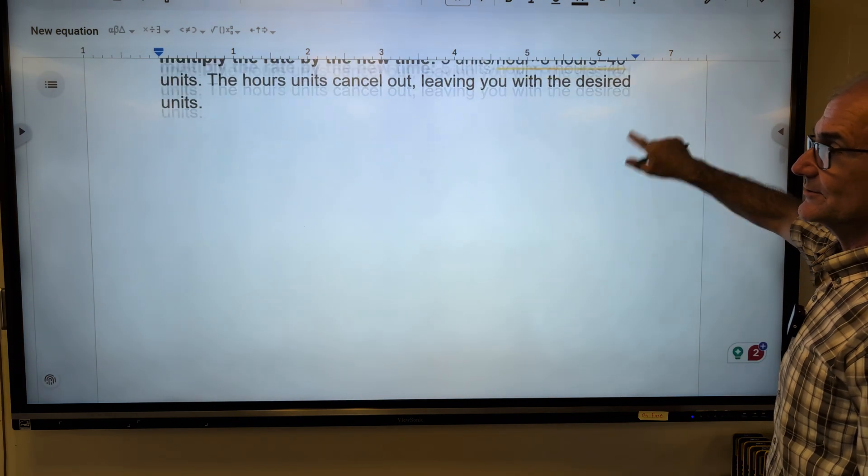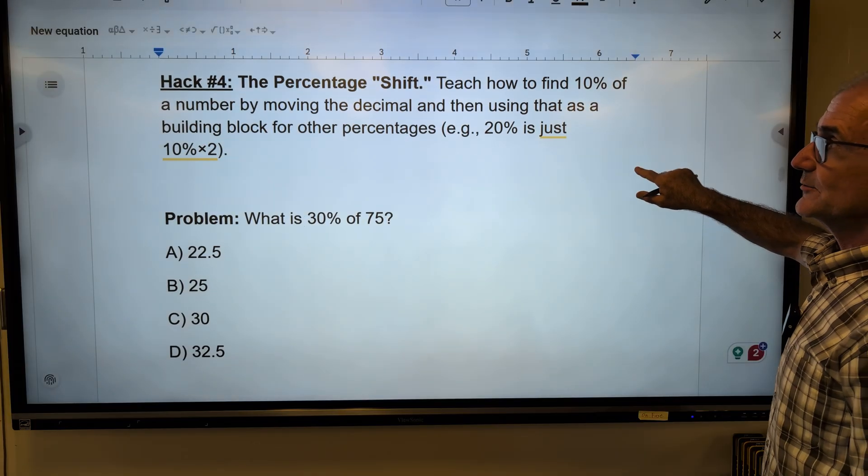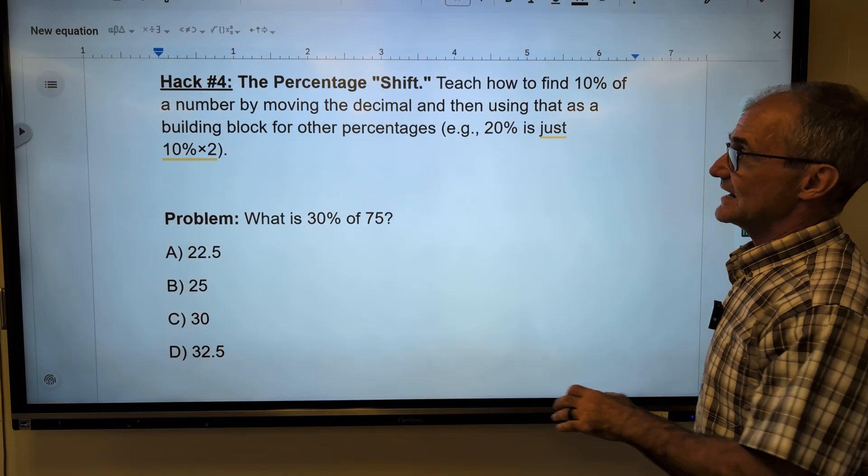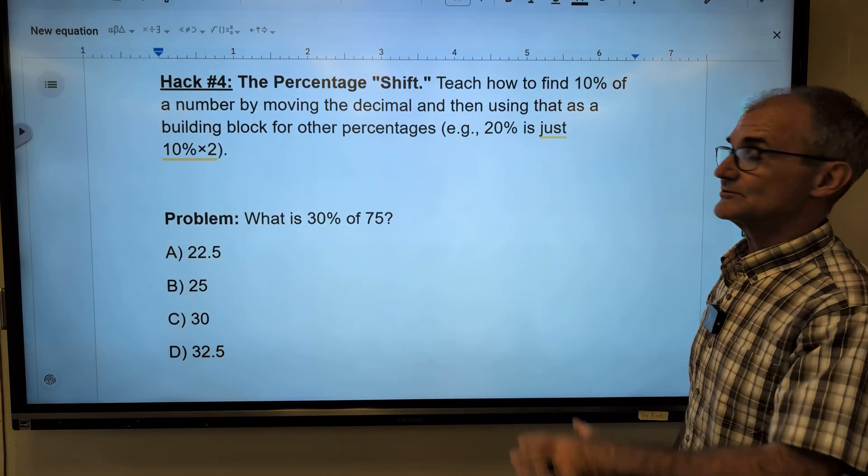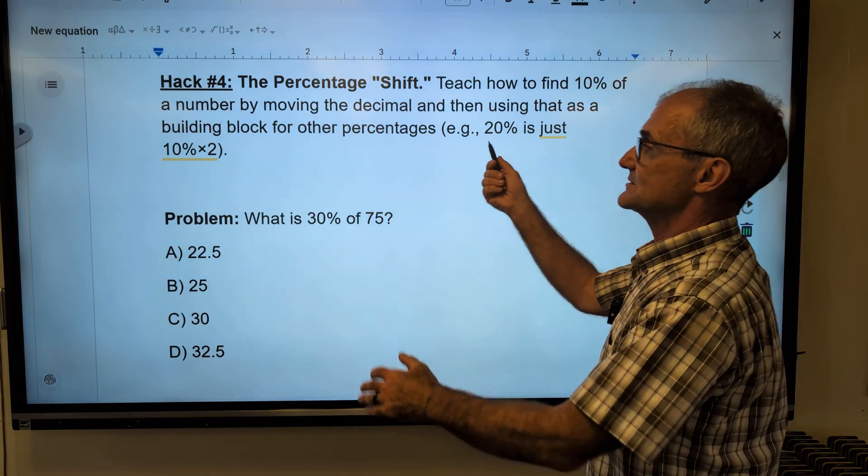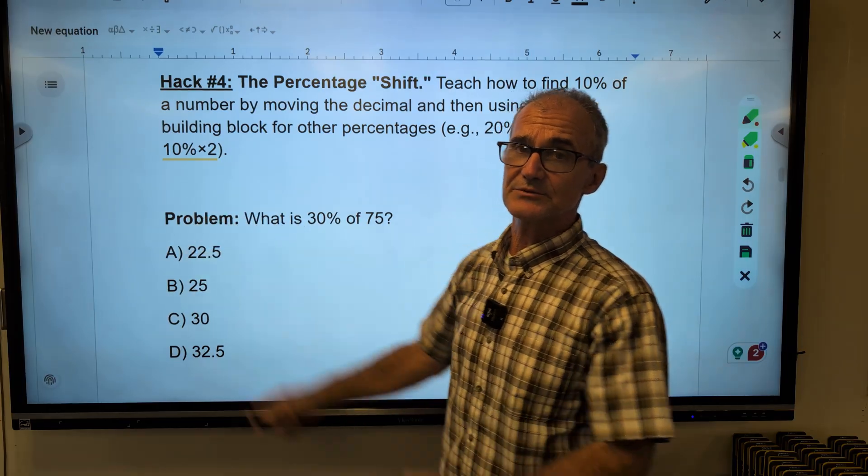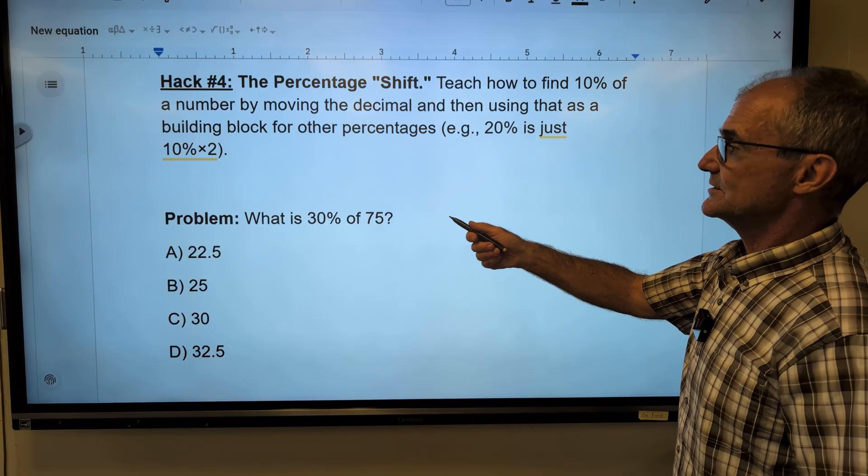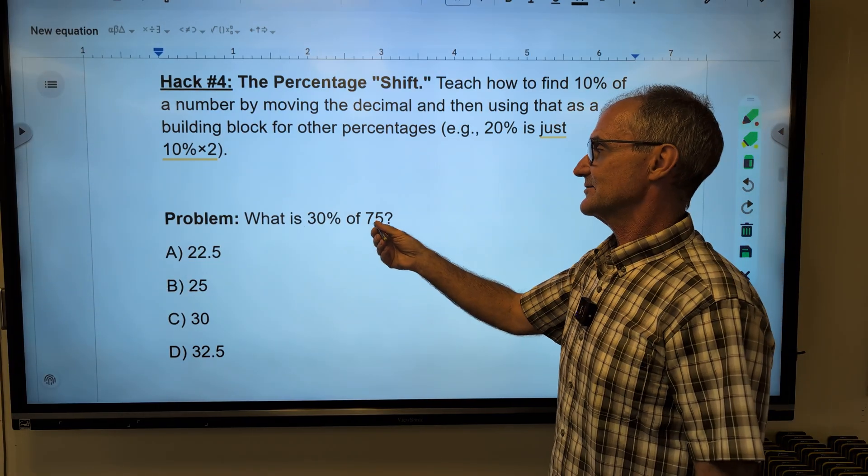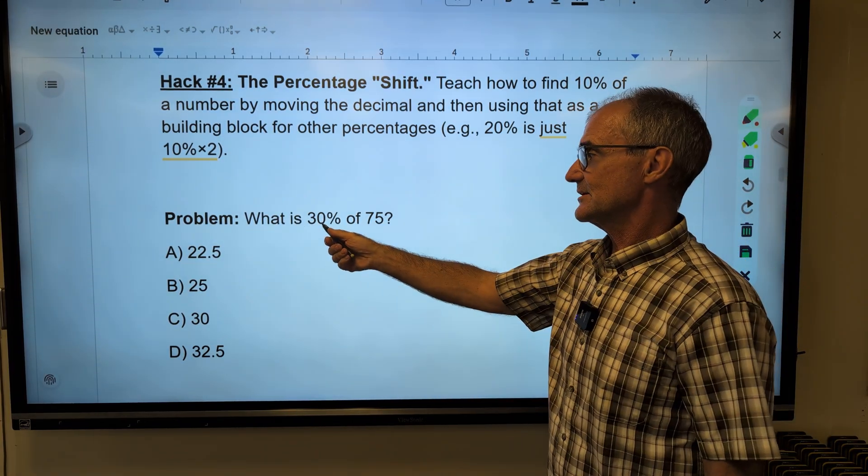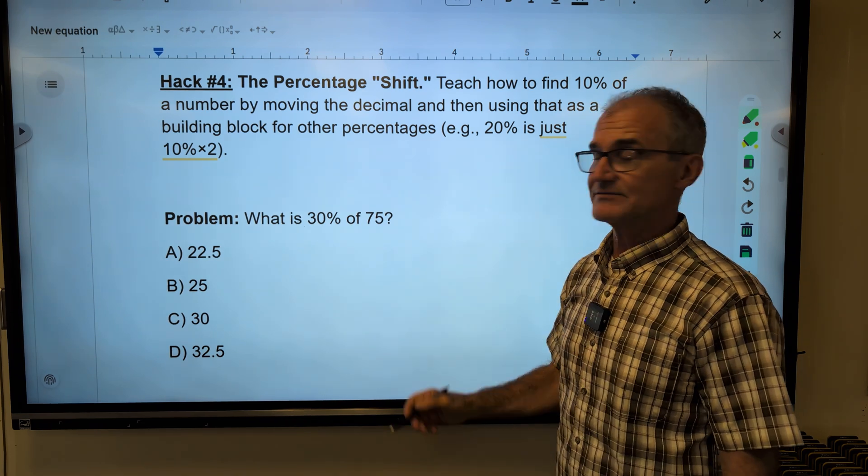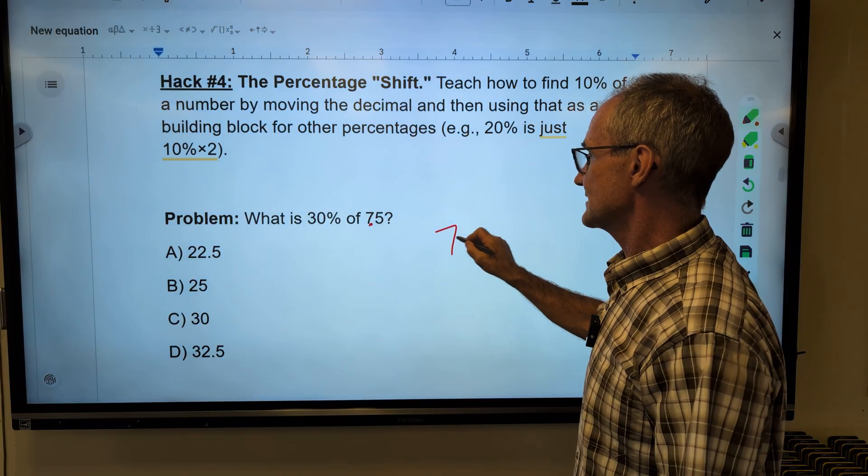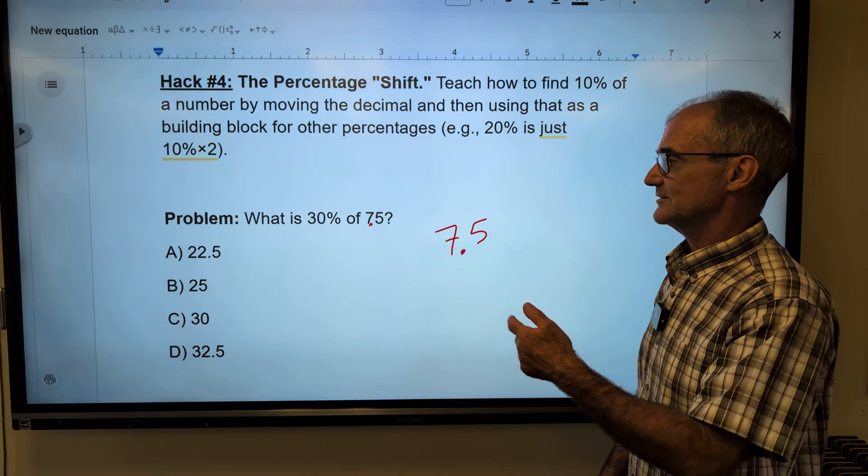Okay, hack number four. Scroll down here to hack number four. The percentage shift, decimals, percents, fractions, going back and forth between them is really important. Understanding that 20% is just two ten percents is really an important idea. So our hack number four is 30% of 75 is a pretty long multiplication problem. But let me just go ahead and take 10% of 75. I just put a dot right there. 10% means move it over once. So 10% of 75 is 7.5.